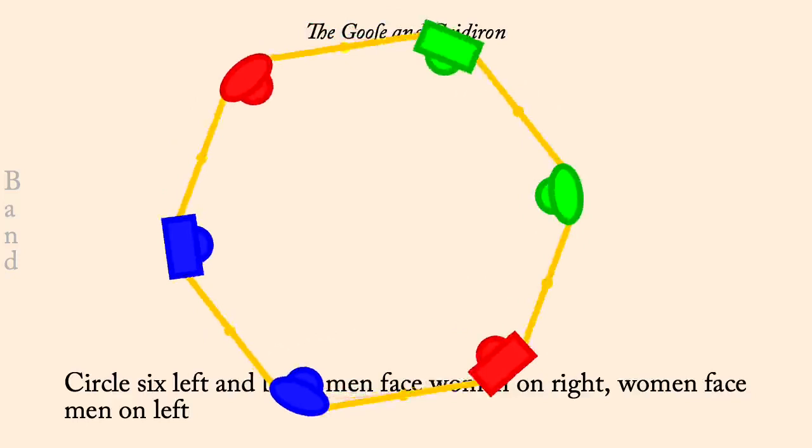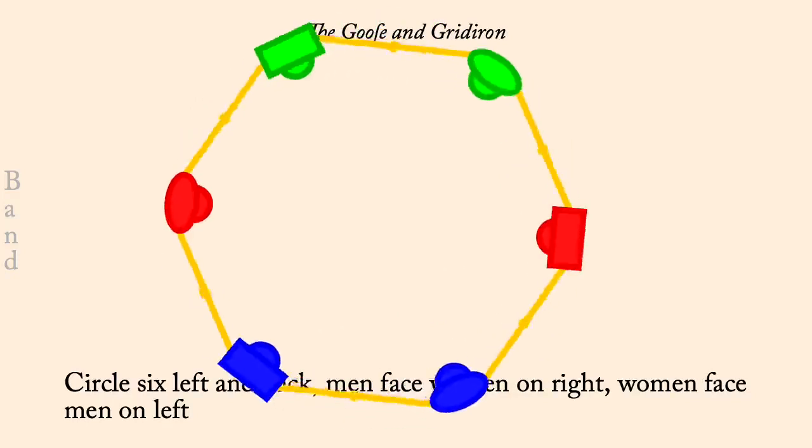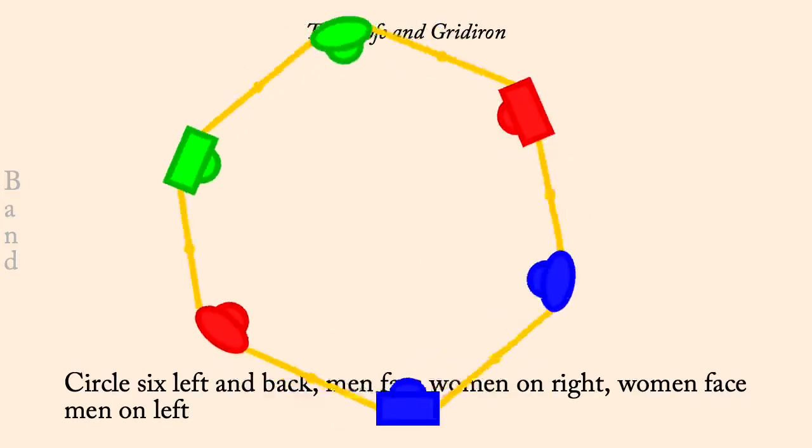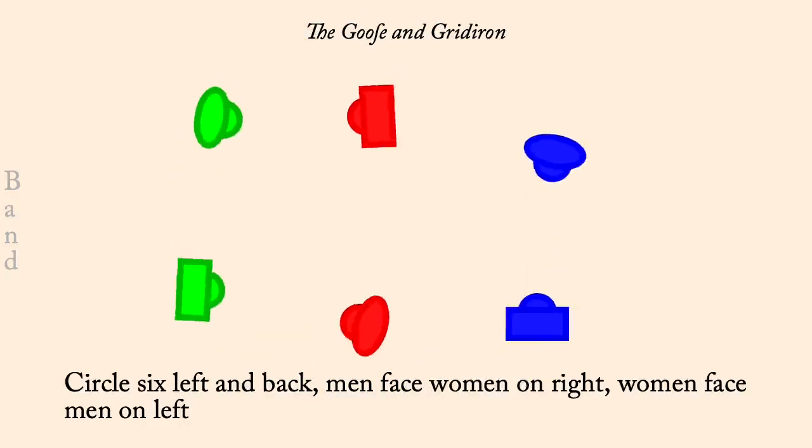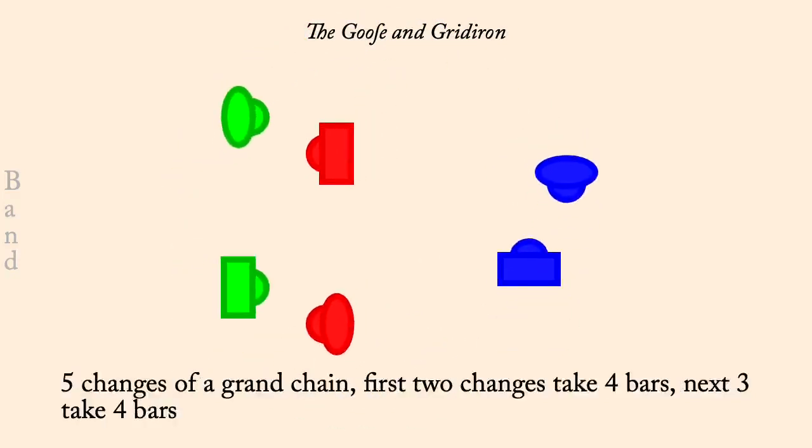Twos face down, ones up, threes across — five changes of a grand chain for six.